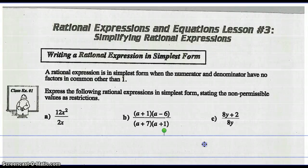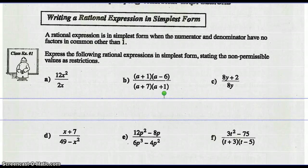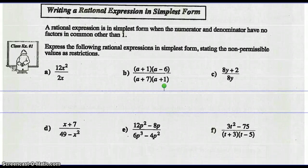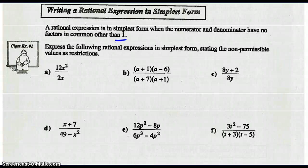Good morning, Math 30-2s. Today we're going to look at writing rational expressions in simplest form. Simplest form means the numerator and denominator have no factors in common other than 1. Express the following rational expression in simplest form, stating the non-permissible values as restrictions.